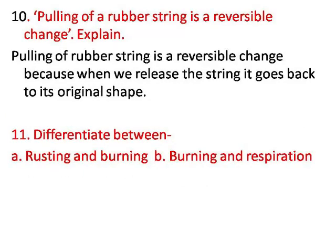Number ten: pulling of a rubber string is a reversible change — explain. When we pull a rubber string it changes its shape, but when we release it, it goes back to its original shape. That is why it is a reversible change.